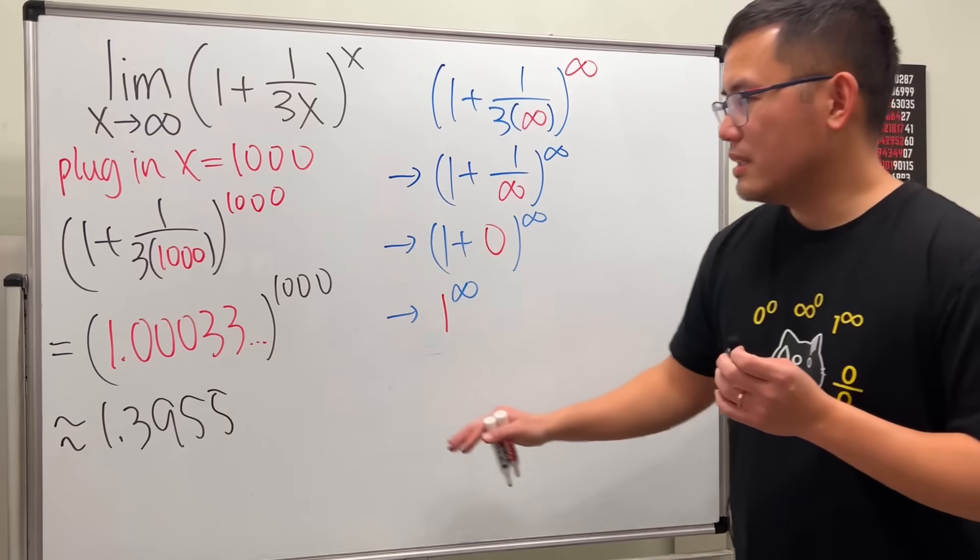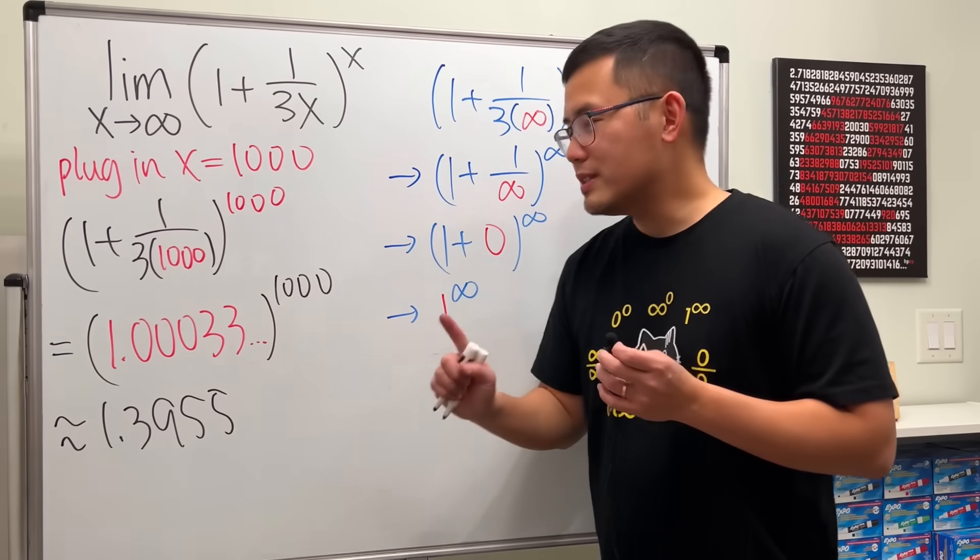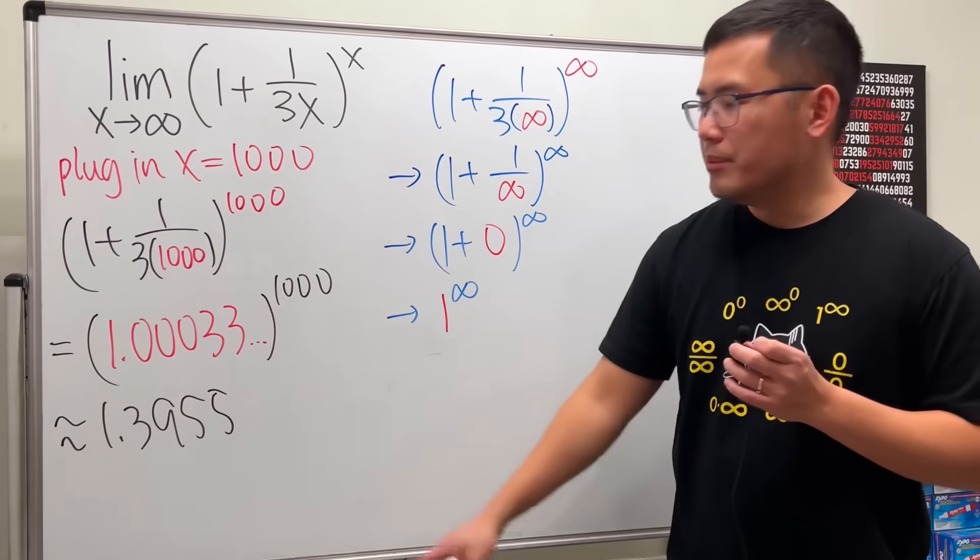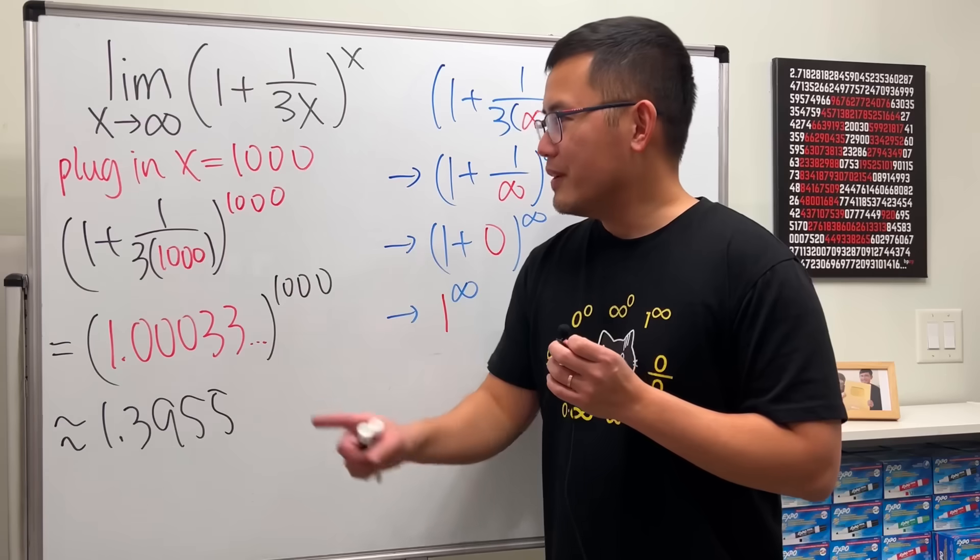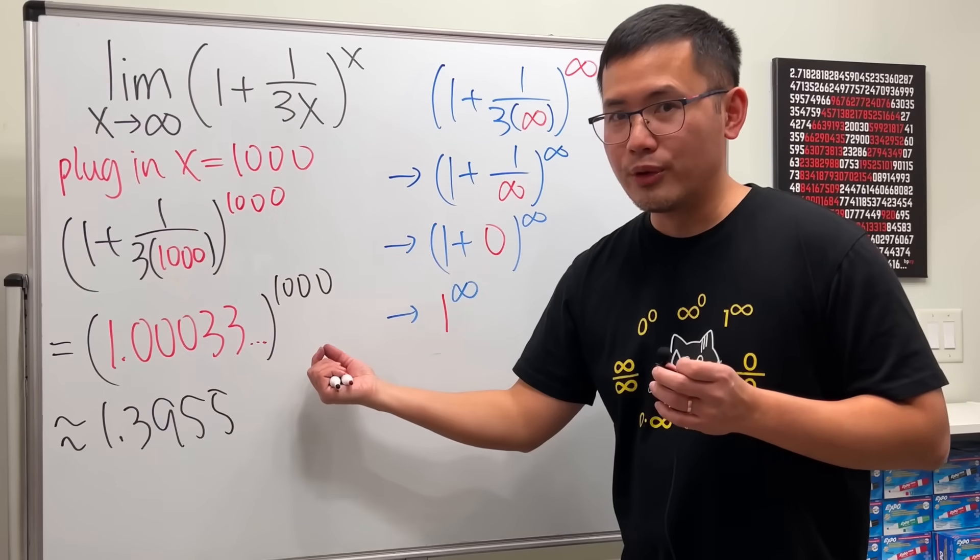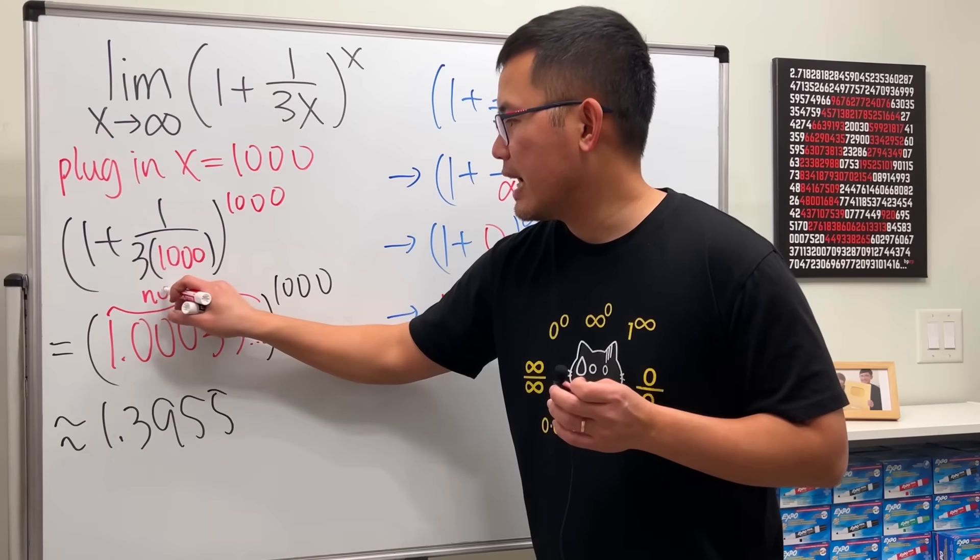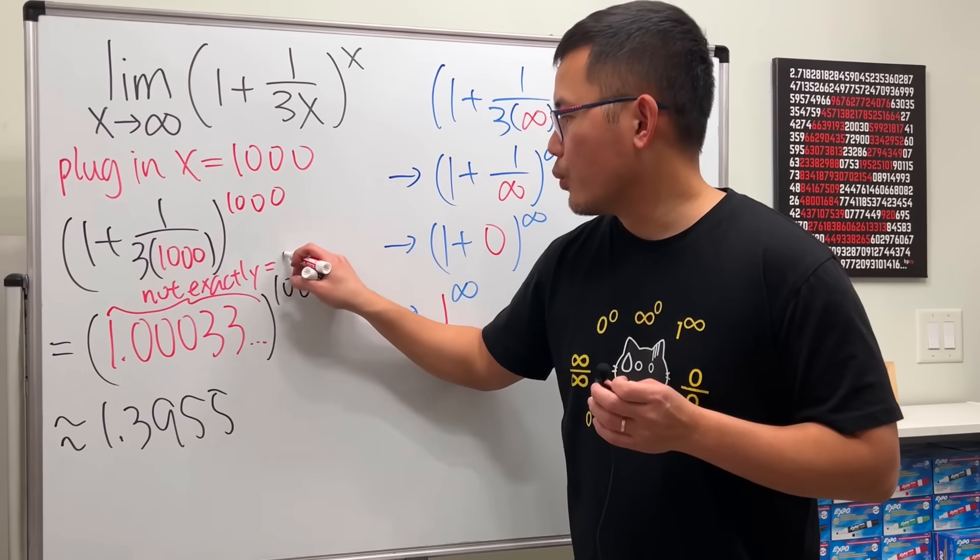So as you can see, this number is actually bigger than 1. And the reason why is because the base here is not exactly equal to 1 because you have some stuff right here. If you put a bigger number for x, this number is just going to be smaller, but the base is not exactly 1.